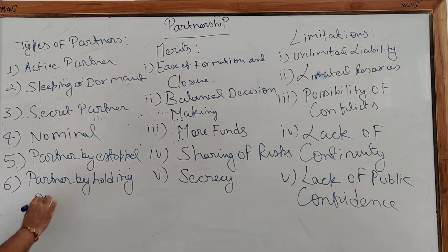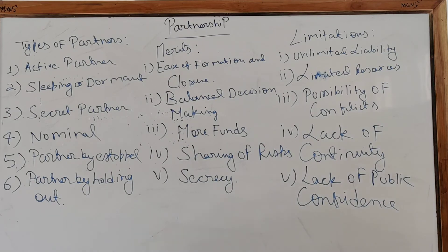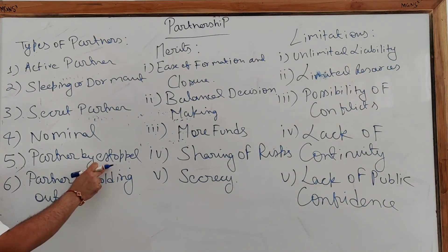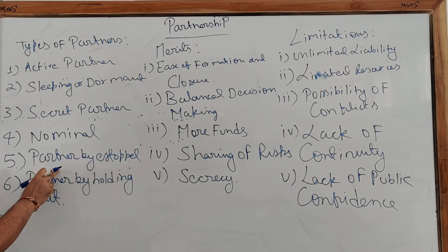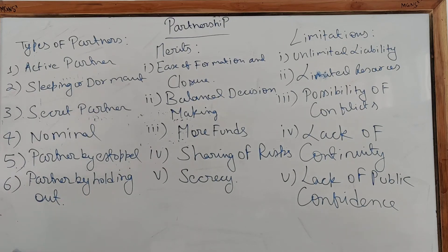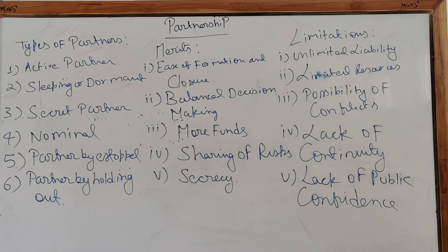Number 6 — Partner by Holding Out: Again, in the case of liability, a partner cannot refuse the claim of a third party that they are not a partner in the firm. The difference: in partner by estoppel, the partner is claiming to be a partner in a firm and the firm is not denying it; in partner by holding out, the firm is claiming that a person is a partner and that person is not denying the claim. In both situations, when liability arises, the partner cannot deny the claim of a third party because in the eyes of the law they are considered a partner.